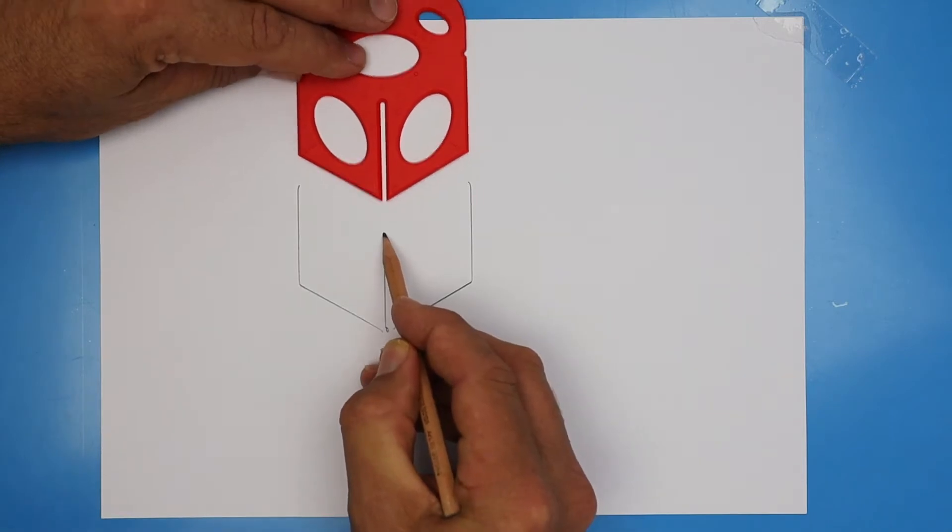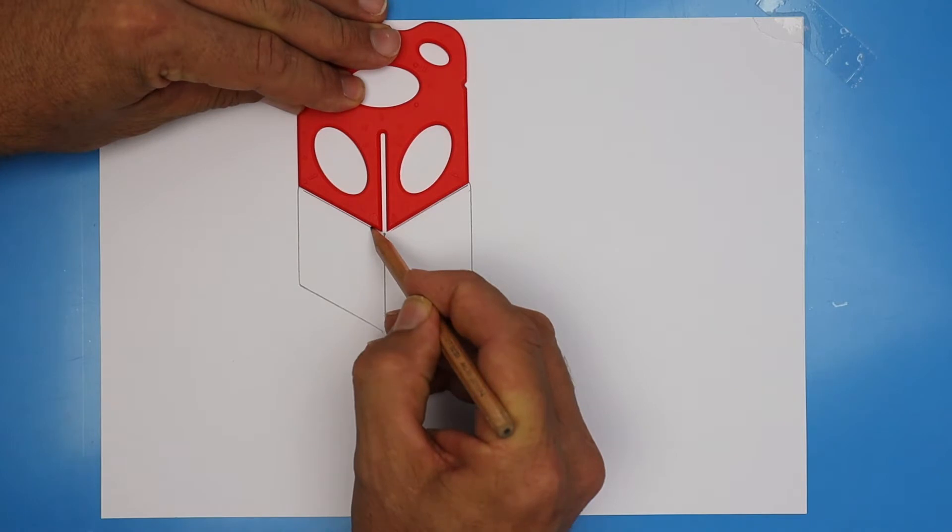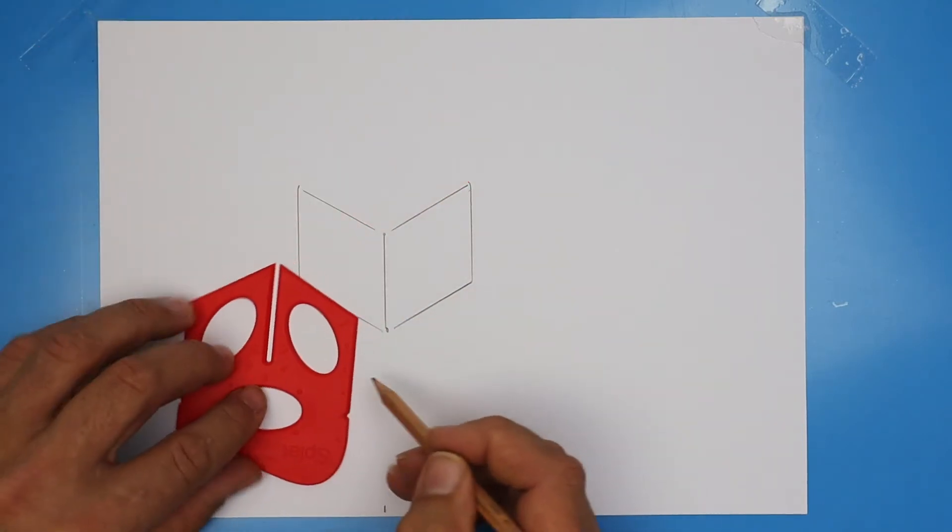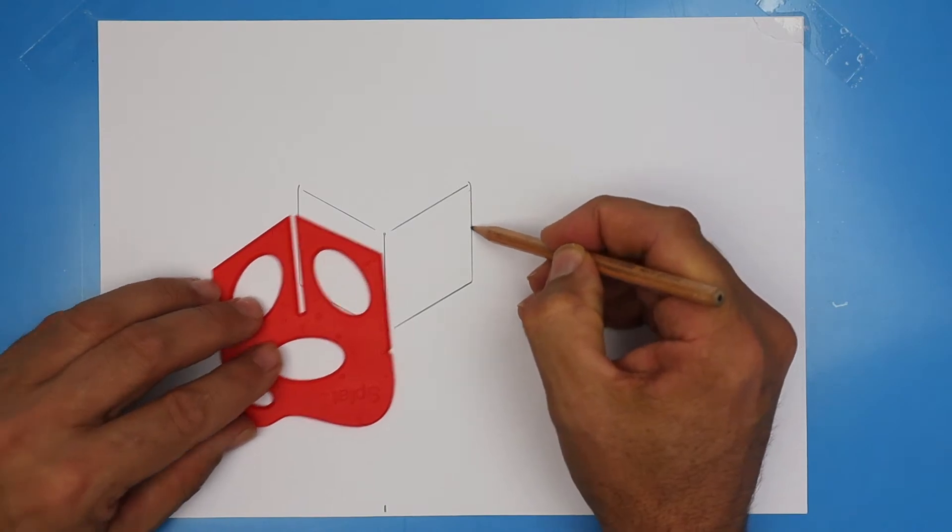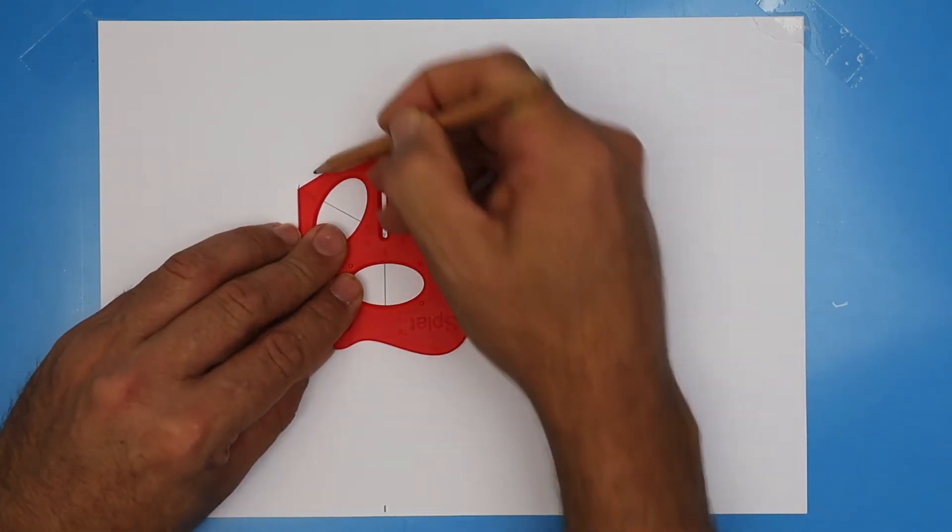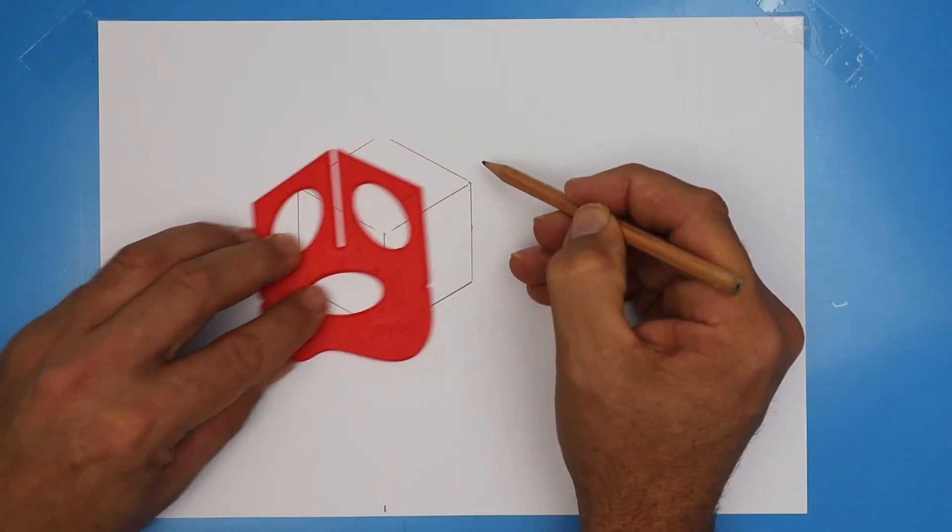Bring your splat down until it's just at the top of that line and then trace in the two edges of the cube that we're drawing. Next we're going to rotate the splat upside down and line up the edge with that line, slide it up until it's at the top and then draw in the two far edges of the cube.